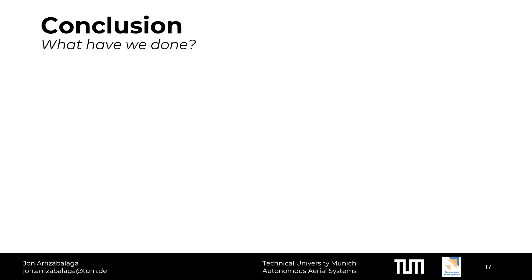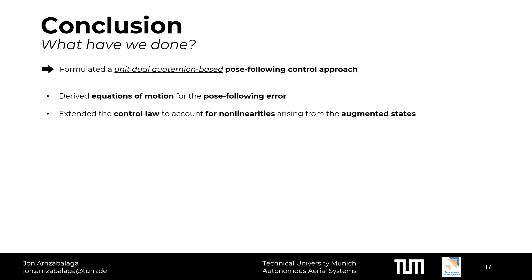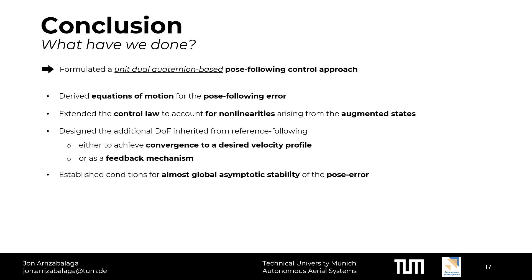This brings us to the end of our presentation. To sum up, in this paper we have formulated a unit dual quaternion-based pose-following control approach for rigid body dynamics. Initially, we have derived the equations of motion for the full pose error between the rigid body and the geometric reference in the form of a dual quaternion and a dual twist. Subsequently, we have extended the original control law to account for nonlinearities arising from the introduction of auxiliary states and methods associated with pose-following. When doing so, the additional degree of freedom has been designed either to achieve convergence to a desired velocity profile or as a feedback mechanism. On top of that, we have also established almost global asymptotic stability. Lastly, we have numerically validated our findings with two illustrative simulations.